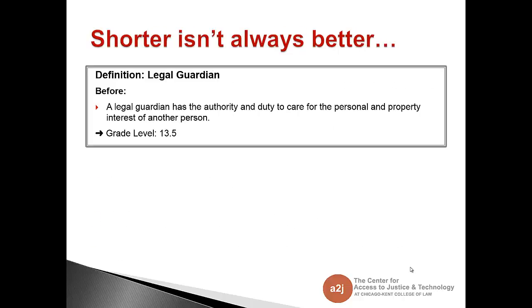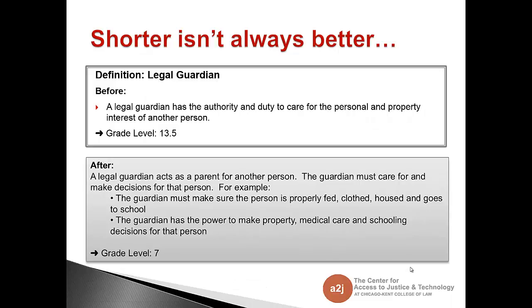When working on readability, it is important to remember that shorter isn't always better. The definition of a legal guardian written at a college level states: 'A legal guardian has the authority and duty to care for the personal and property interests of another person.' However, by reworking this definition, we can hit a 7th grade reading level — much closer to our 5th grade goal — and it isn't shorter, but it is clearer: 'A legal guardian acts as a parent for another person. The guardian must care for and make decisions for that person. For example, the guardian must make sure the person is properly fed, clothed, housed, and goes to school. The guardian has the power to make property, medical care, and schooling decisions for that person.'